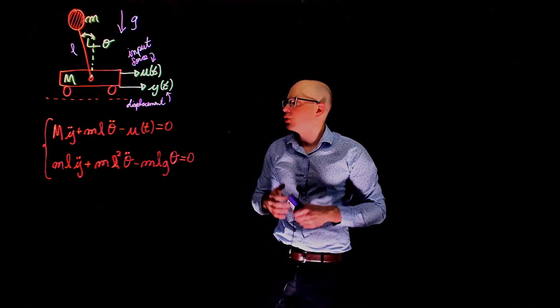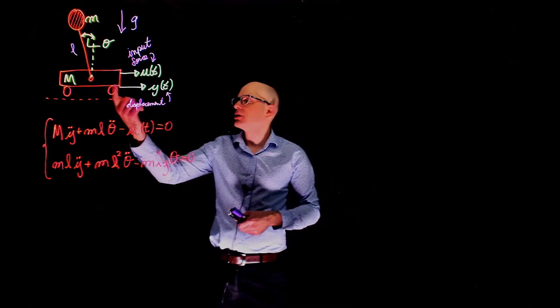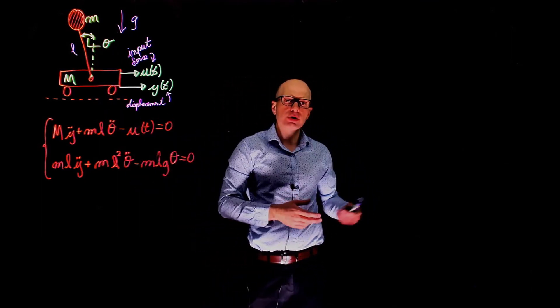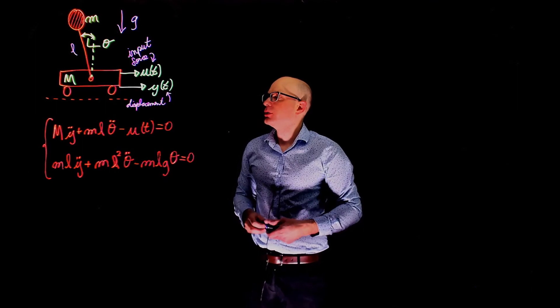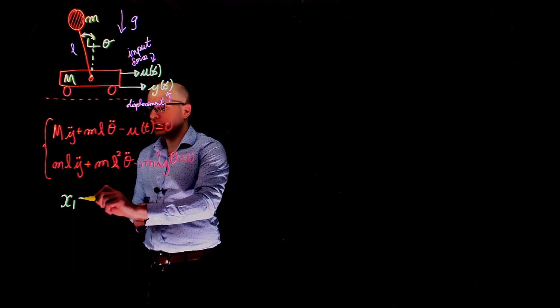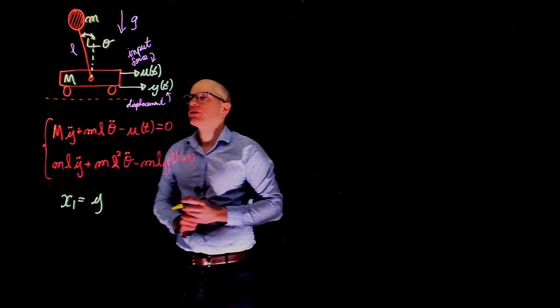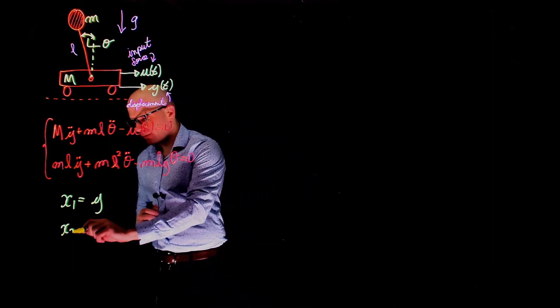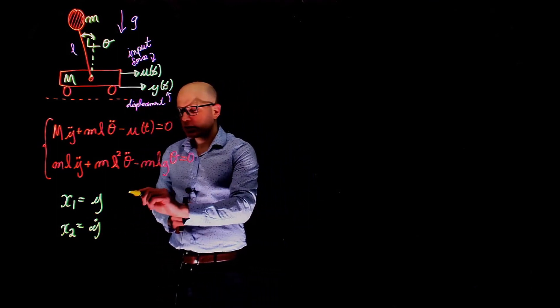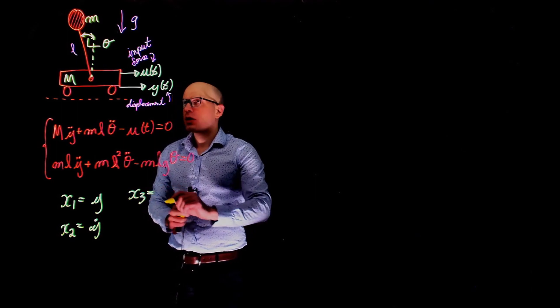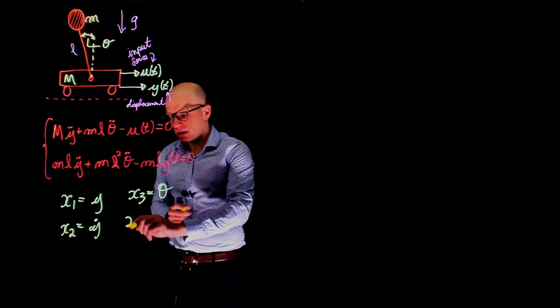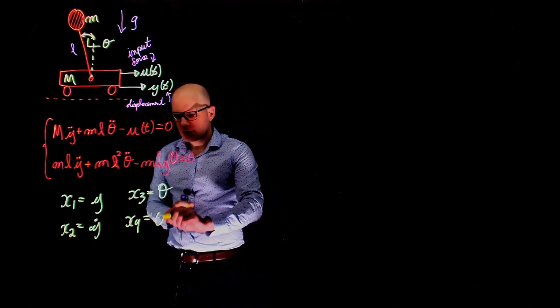So we can define one of our state variables as the displacement of the cart. And we can also use the displacement of the bob and of course their respective derivatives. So let's define our first state space variable x1 as the position of the cart. x2 is the speed of the cart, that is y dot. x3 is now the angle of the pendulum, that is theta, and x4 is theta dot.